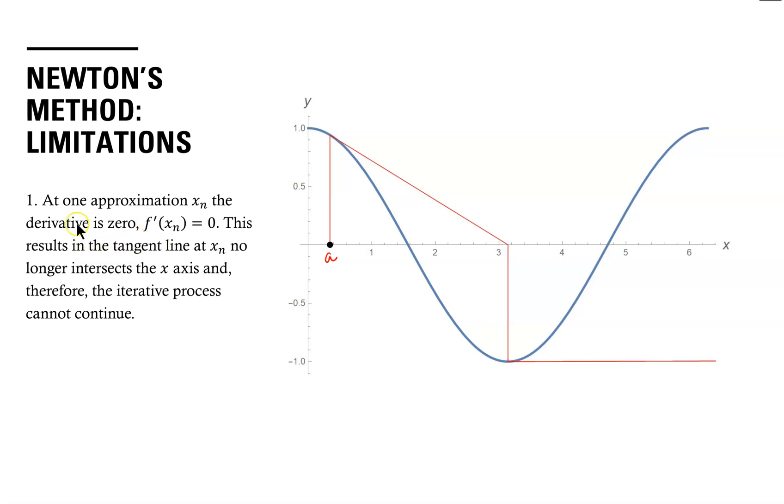One limitation is when at one approximation xn, the derivative is zero. If the derivative is zero, then we have a horizontal tangent line, and that tangent line can no longer intersect the x-axis, which means we no longer have a next iterate or approximation to the root of the function. Therefore, the process cannot continue.